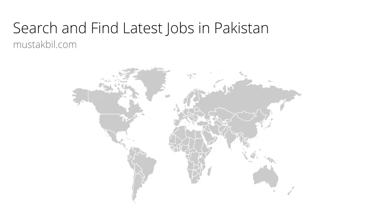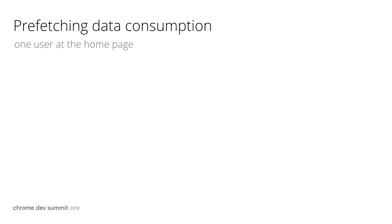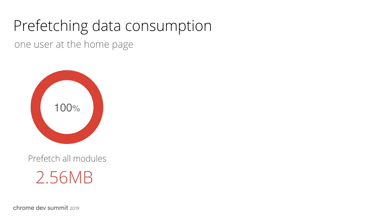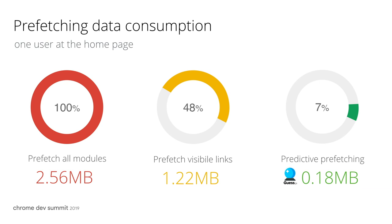Navid is building a popular web app with tens of thousands of users for finding jobs in Pakistan. He developed his web app with Angular, using the Angular router and CLI. If he was prefetching all the modules in the app, this would have consumed 2.56 megabytes of data for a single user visiting the homepage. With a more efficient strategy, prefetching only the visible links on the page would have consumed 1.22 megabytes of data. With Guess.js, Navid's website consumes only 0.18 megabytes of data for prefetching when the user visits the homepage. This is 7% of the traffic consumed by the most aggressive strategy, saving gigabytes of traffic across tens of thousands of daily users.